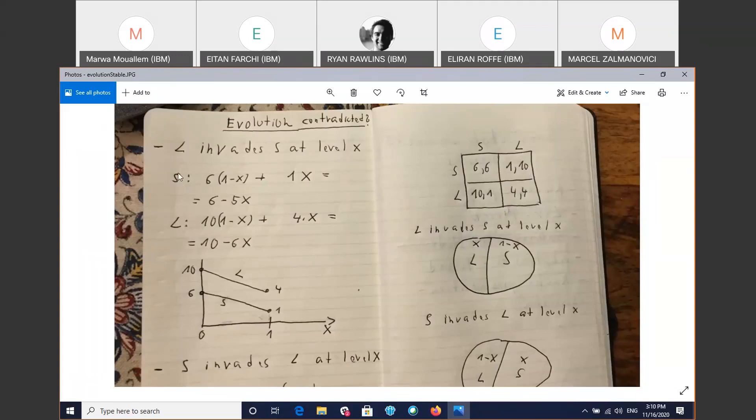Let's see what S is going to be doing if S is invaded by L. So with probability X we're going to have the situation SL, and S is going to get 1. With probability 1 minus X, we're going to get the situation SS, and S is going to get 6. Overall, S is going to get 6 minus 5X. Okay. Is that clear? Yes.